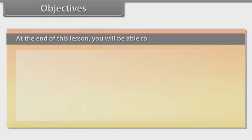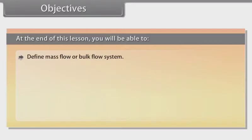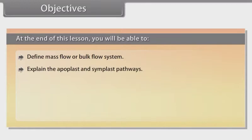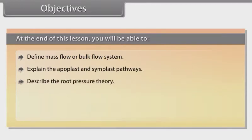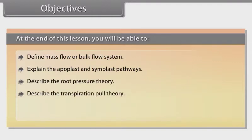At the end of this lesson, you will be able to: define mass flow or bulk flow system; explain the apoplast and symplast pathways; describe the root pressure theory; describe the transpiration pull theory; and explain the transpiration process.